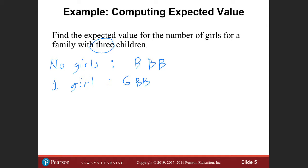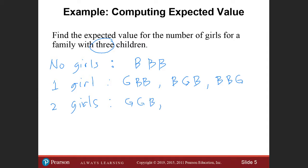For one girl, we can have girl-boy-boy, boy-girl-boy, or boy-boy-girl — three sequences. For two girls, we have girl-girl-boy, girl-boy-girl, or boy-girl-girl. And for three girls, the sequence is girl-girl-girl.